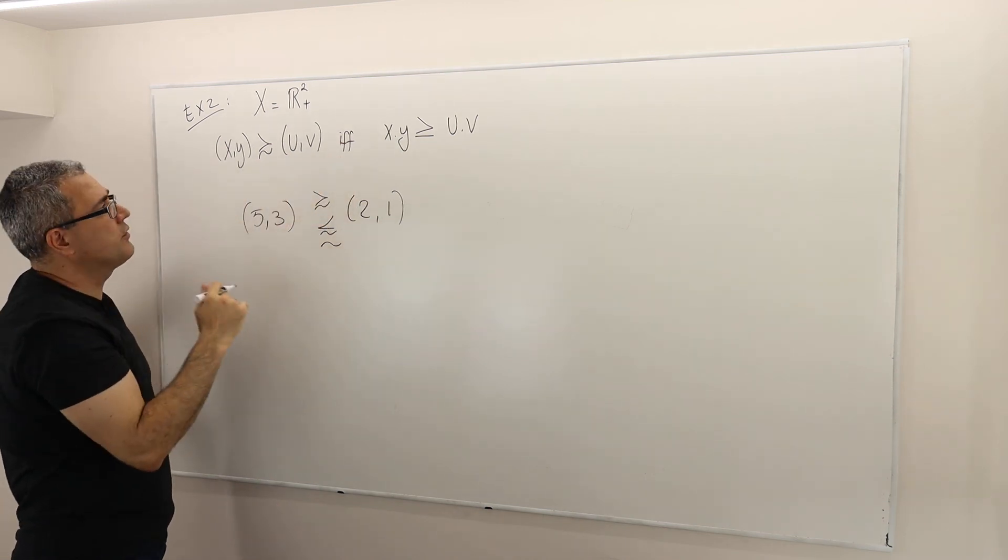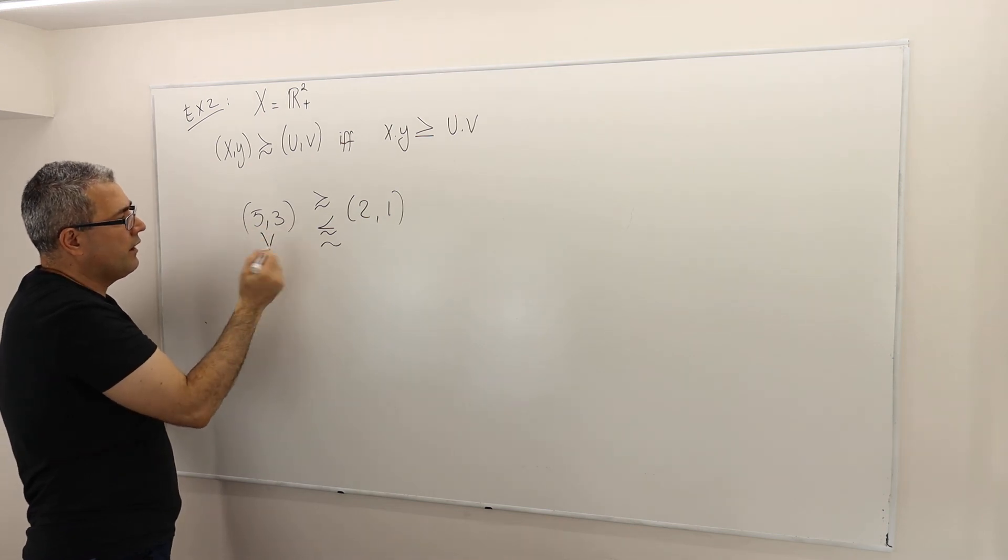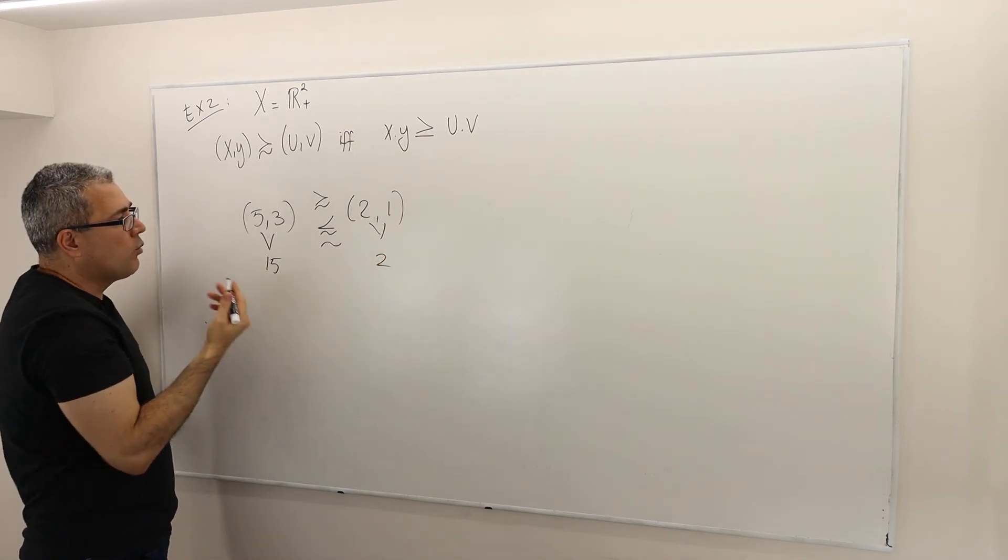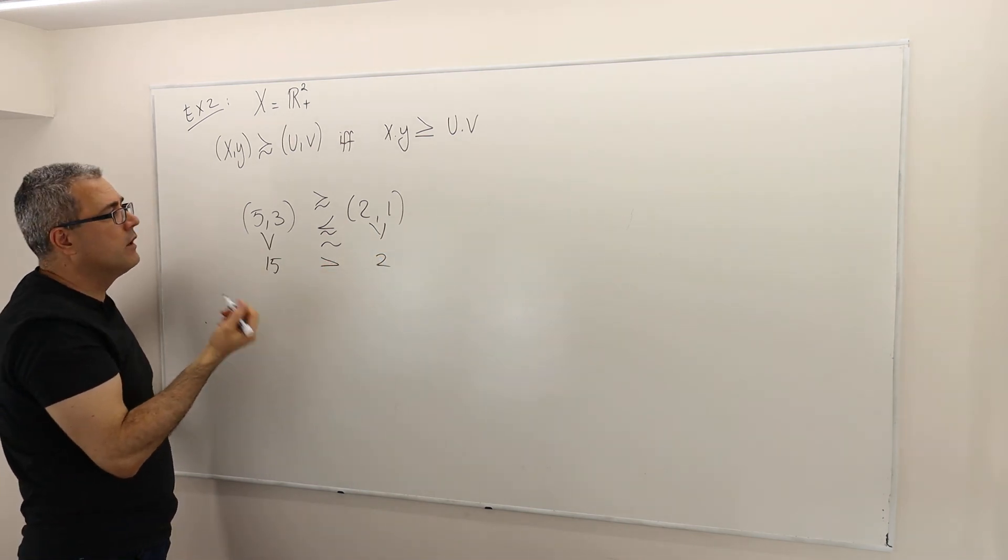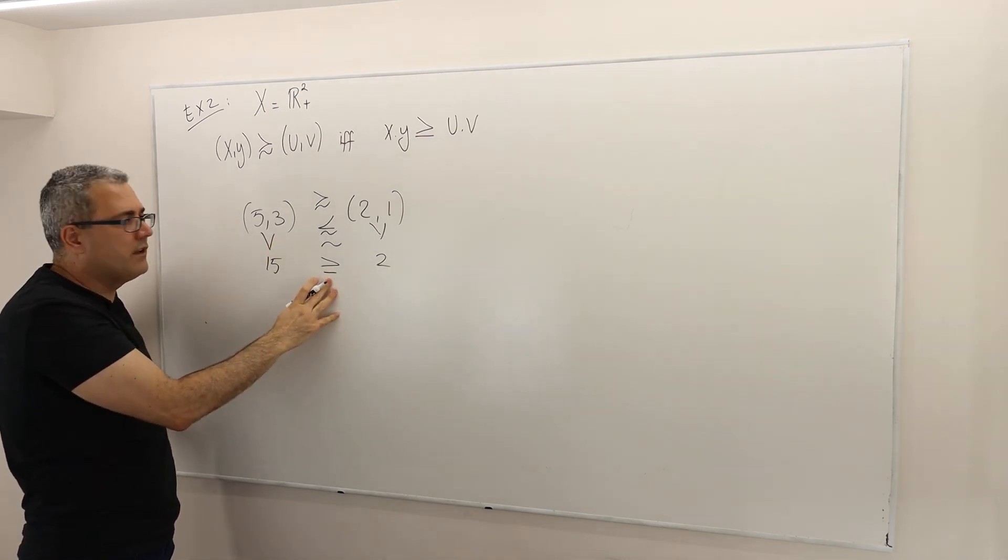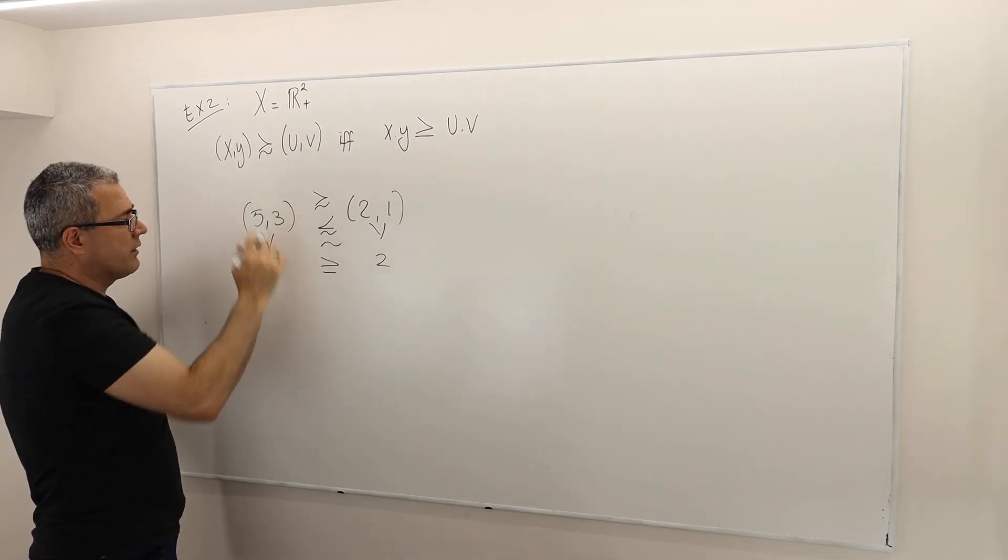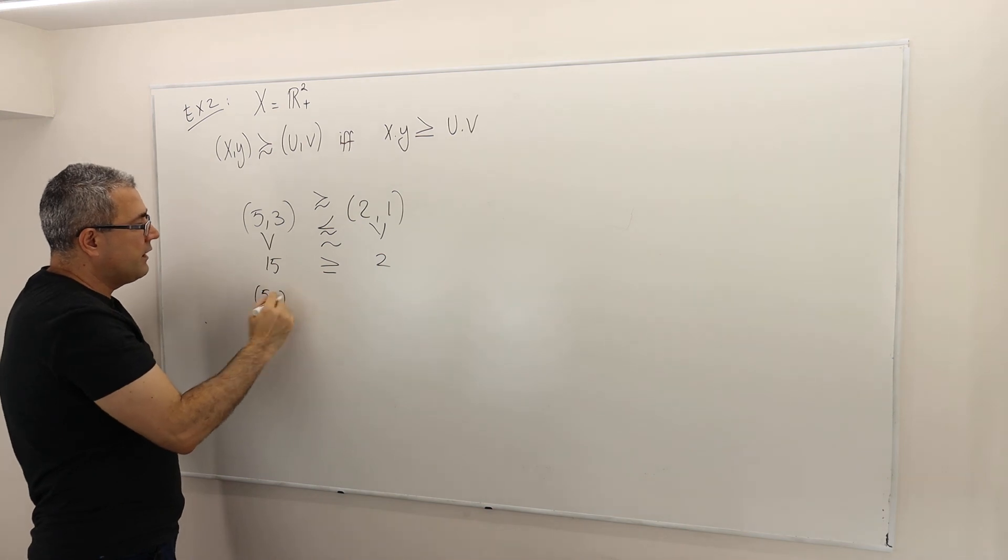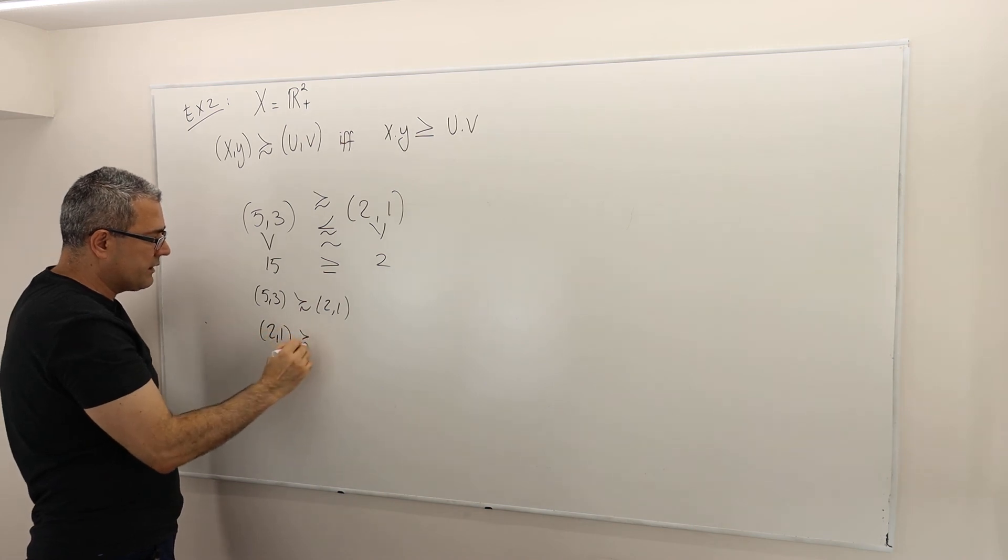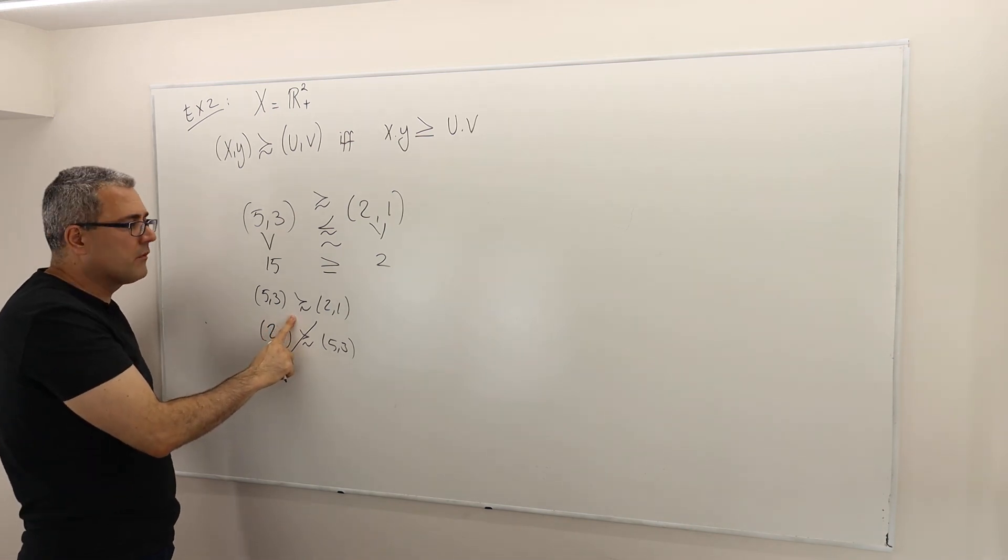According to this definition, I need to look at the multiplication of those vectors. So this is 5 times 3, which is 15. This is 2 times 1, so it's 2. What do I know? I know that 15 is greater than 2. So it is greater than or equal to 2. There's no harm in saying this. I know that they're not equal. So therefore, this vector (5,3) is at least as good as (2,1). But the opposite, (2,1) at least as good as (5,3), this is not true. This is false. But this is true.